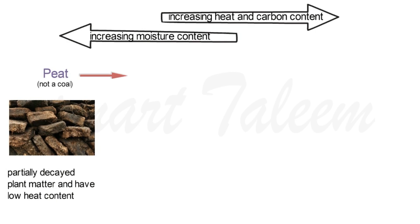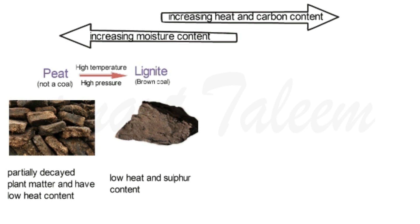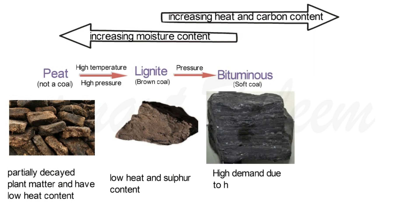Then high temperature and high pressure are applied on the peat, and peat is converted into lignite — which is brown coal. As you can see in the picture, lignite has low heat content and also has very low sulfur content. Upon further pressure on the lignite, as it continues to be buried deeper, it is converted into bituminous coal, which is also named soft coal.